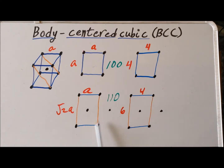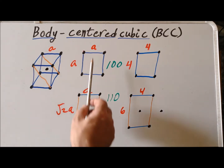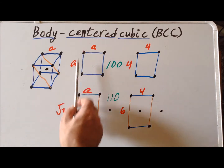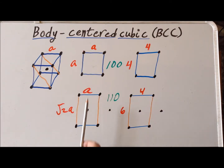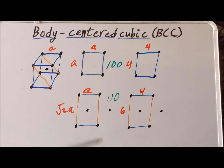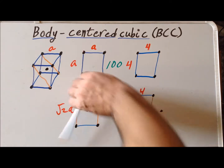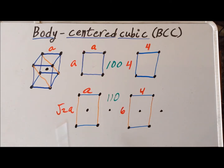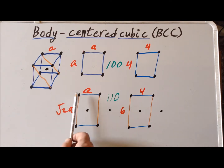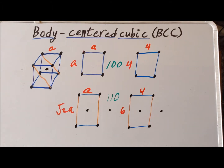Now we have a couple of different ways that we can describe this particular surface structure. Recall that for the 100 plane we had four-fold symmetry. For the 110 plane, because it's rectangular, we now have C2 symmetry. We have a C2 rotational axis, with C2s at the center and at the vertices. We can think of the unit cell as a rectangle with an additional atom in the center, so we can call it a centered rectangular cell.